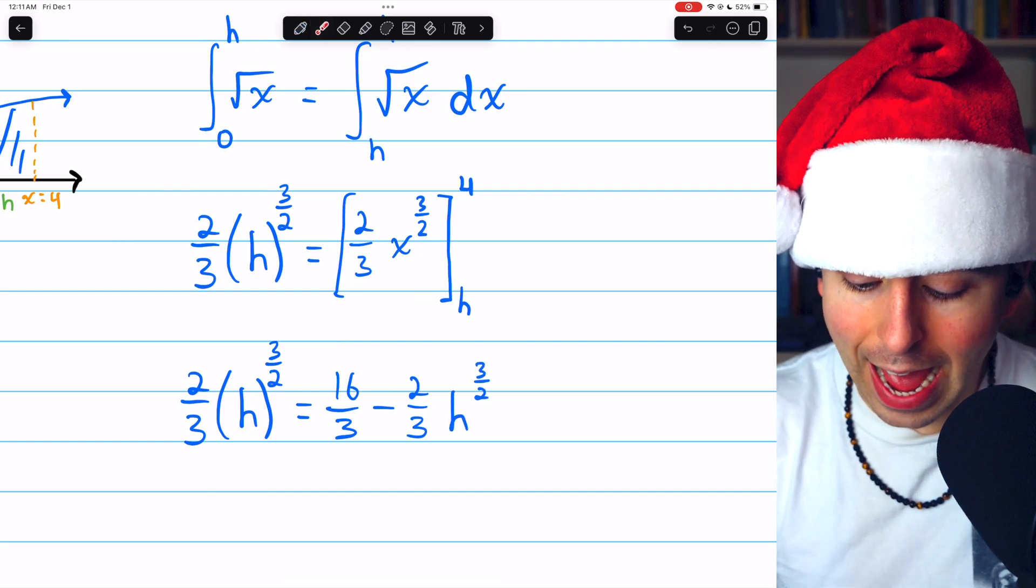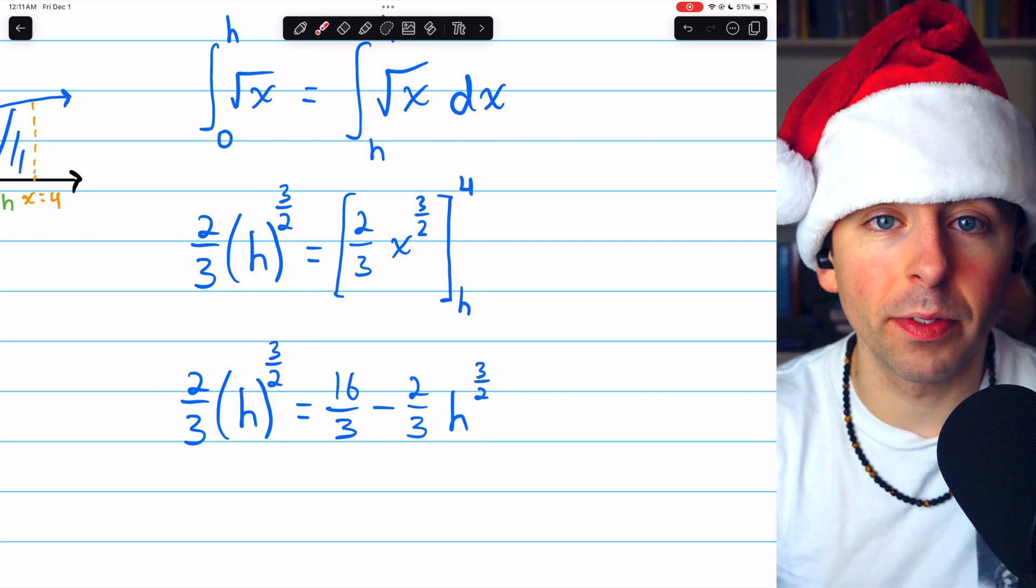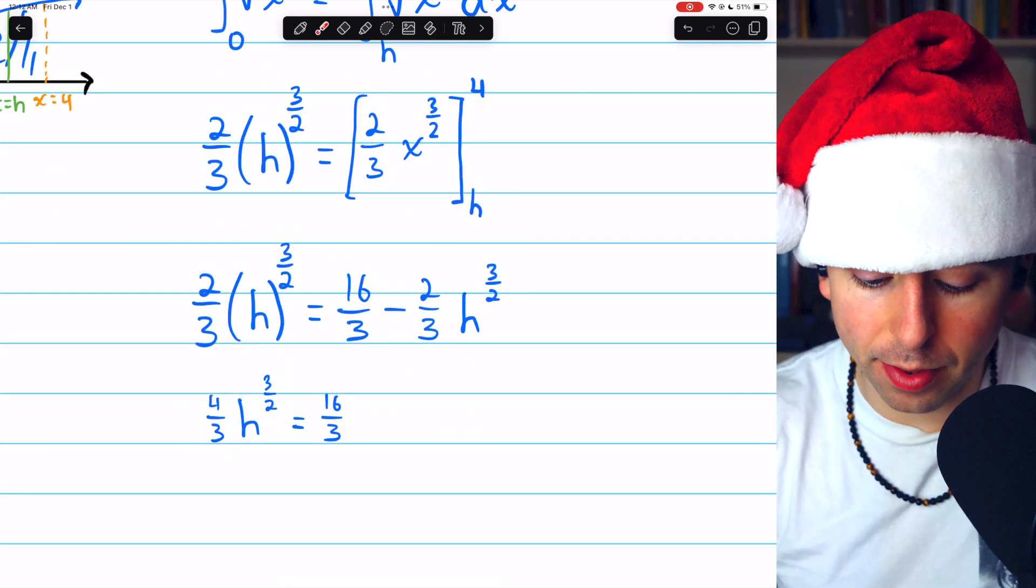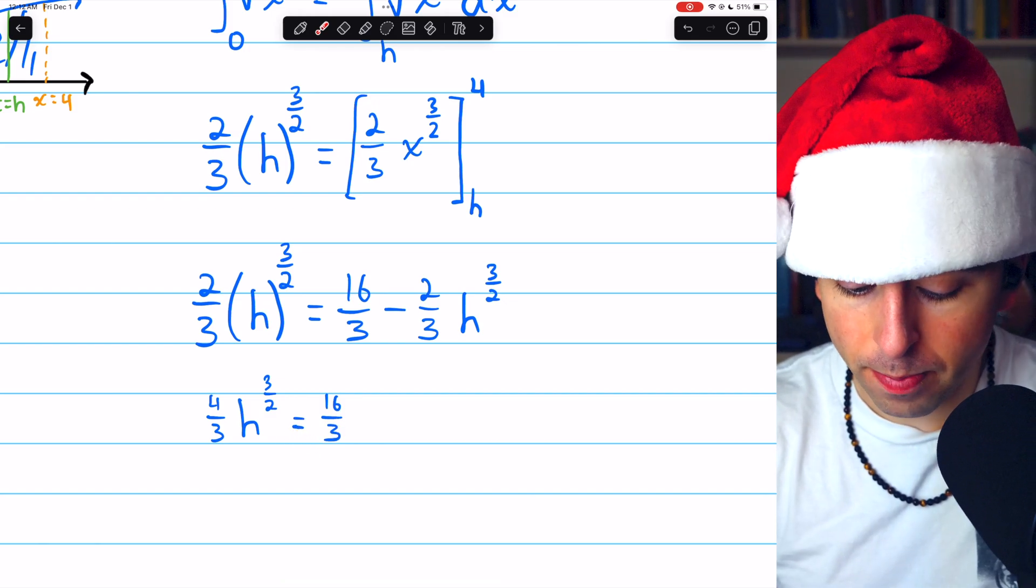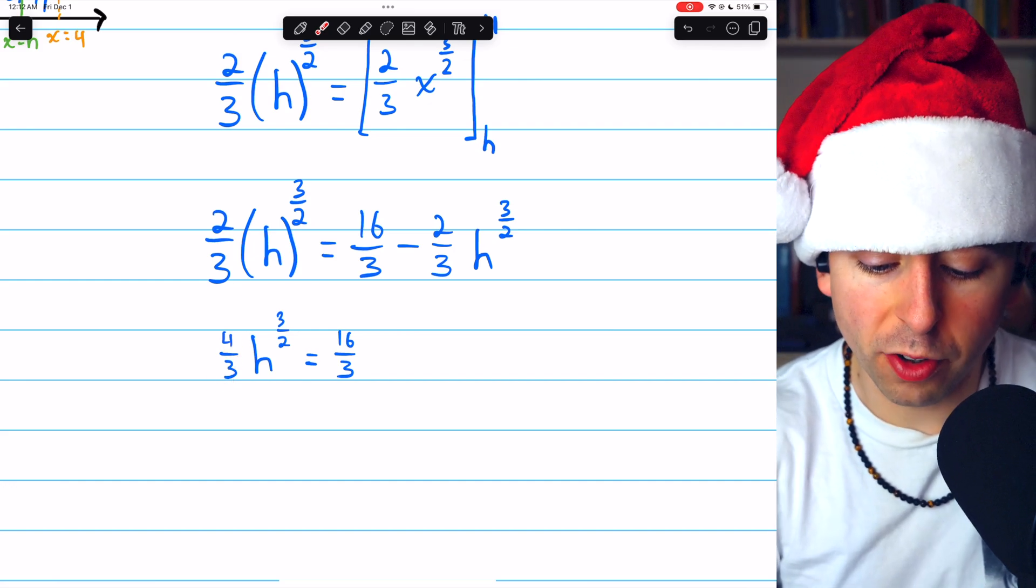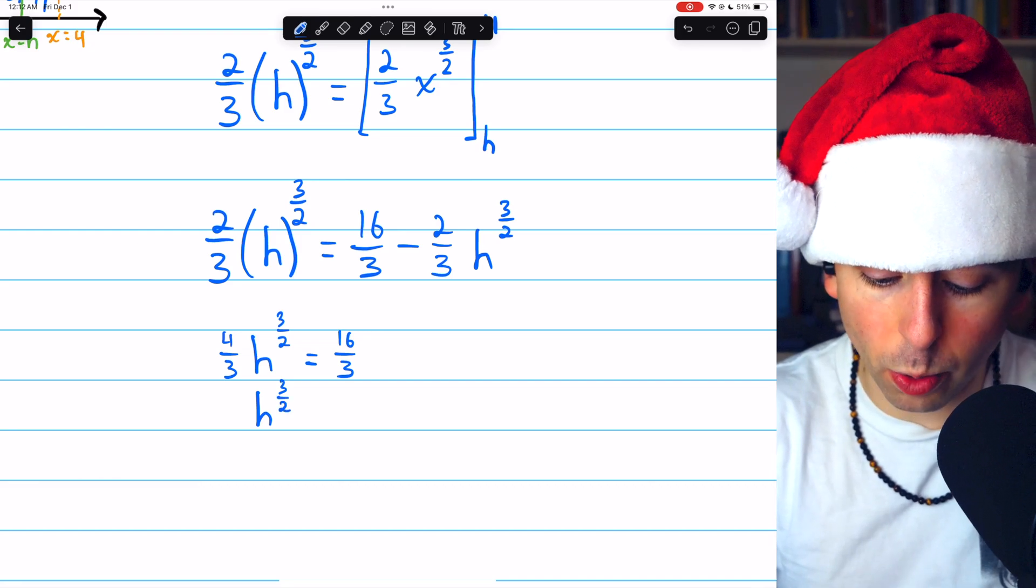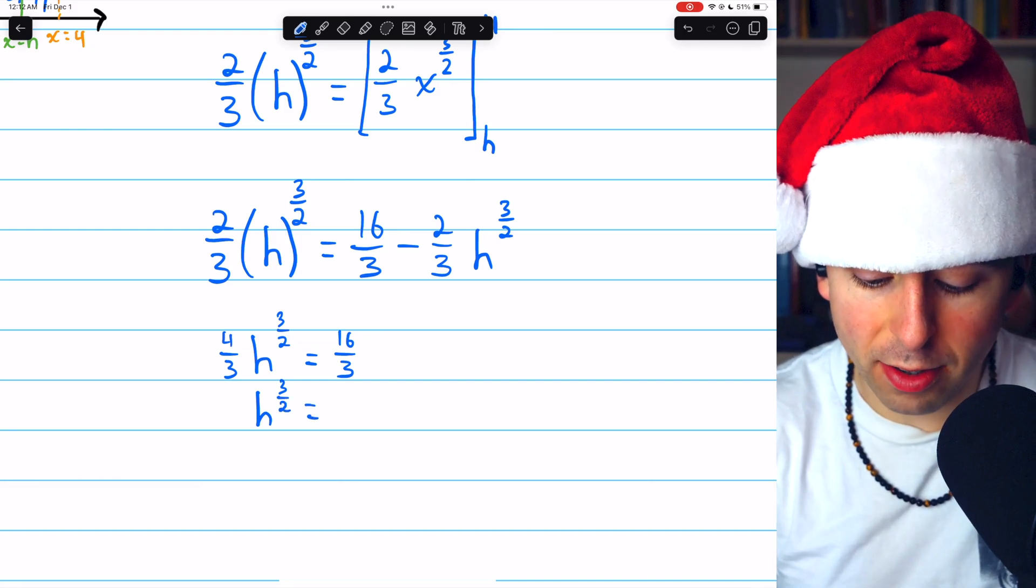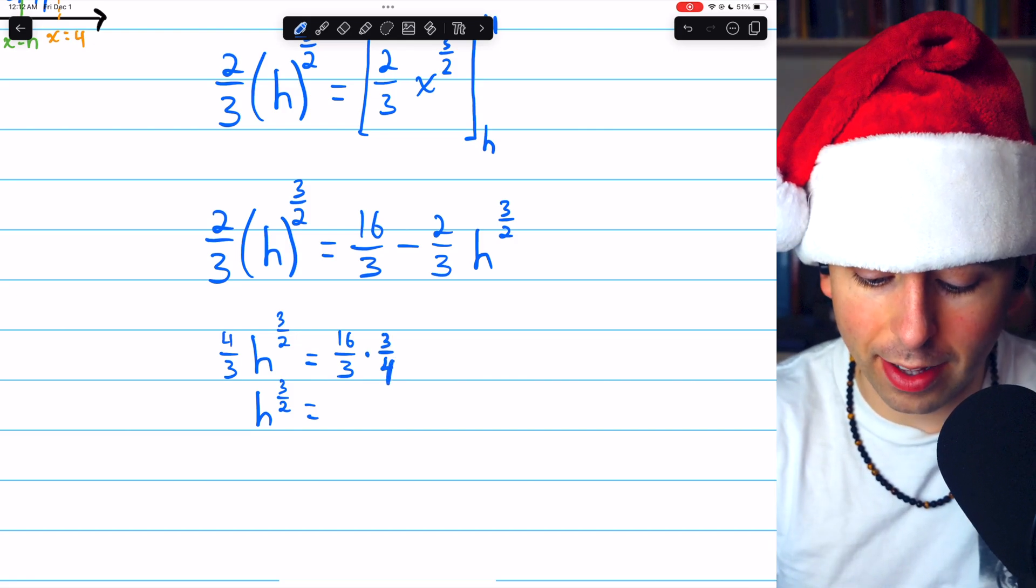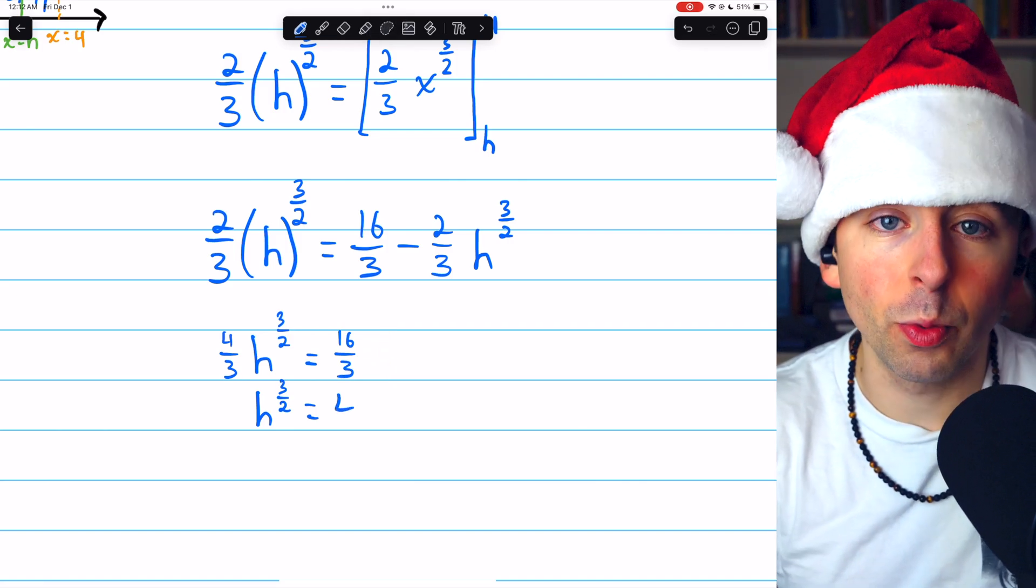Then we can go ahead and add 2 thirds H to the 3 halves to both sides to collect all of the H's together. So we now have 4 thirds H to the 3 halves equals 16 thirds. Let's go ahead and multiply both sides by 3 fourths to get rid of this coefficient in front of the H. That's going to give us H to the 3 halves equals multiply both sides by 3 fourths. So we're multiplying by 3 fourths over here. 3s cancel out. A factor of 4 will cancel out. And so on the right side, we're just going to be left with 4.